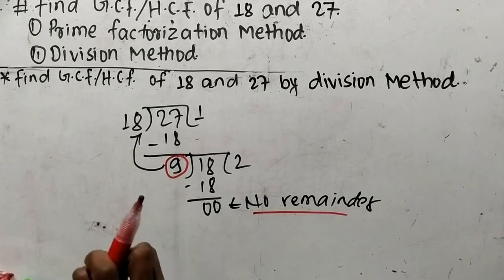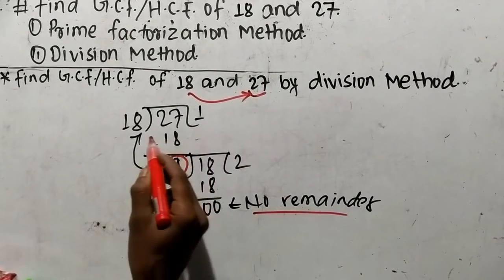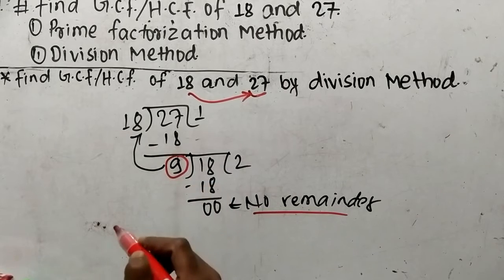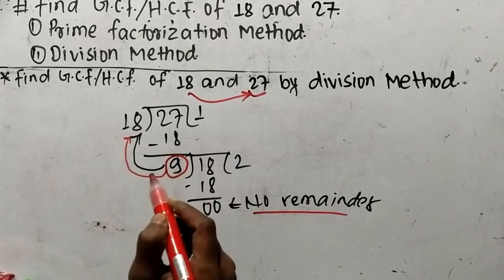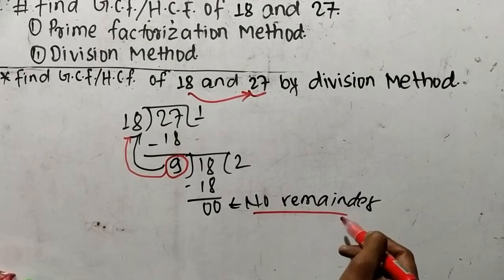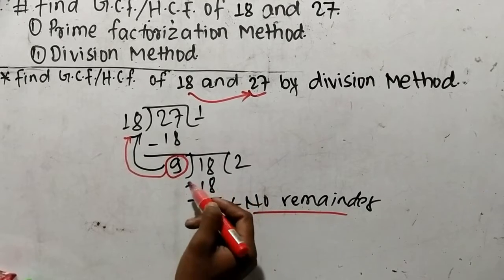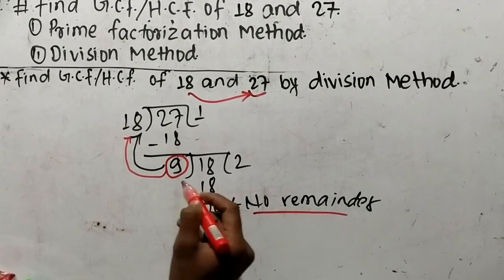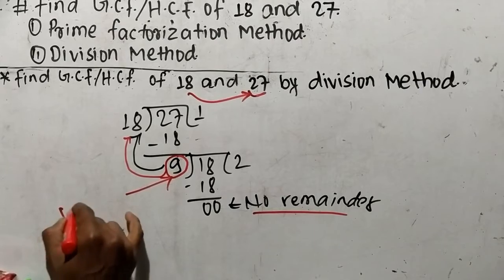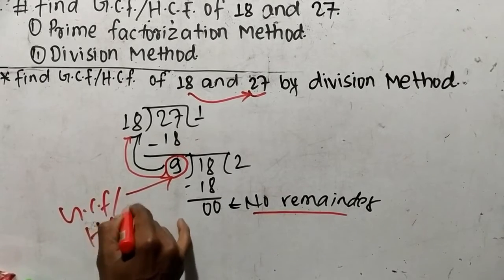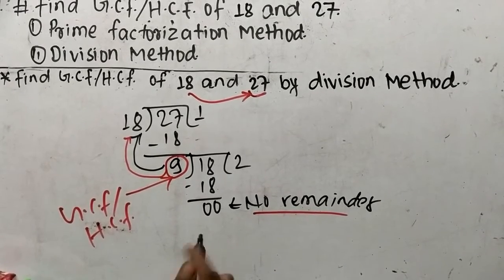While finding GCF or HCF by division method, first divide the greater number by the lesser number. Here 18 times 1 gives 18, and the remainder is 9. When a remainder comes, divide the divisor by the remainder and keep dividing until there is no remainder. Here the remainder was 9, so we divide 18 by 9: 9 times 2 equals 18, giving remainder 0.